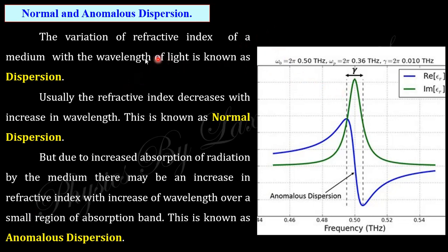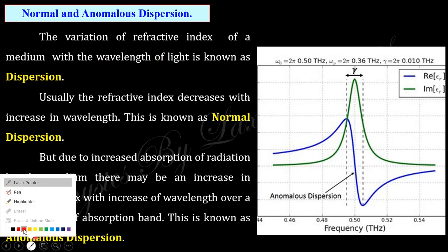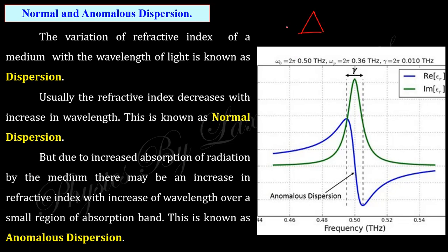What do we mean by dispersion? Dispersion is the variation of the refractive index of a medium with wavelength. You know the prism experiment — when white light, a combination of seven colors, is incident on a prism, it disperses into different colors because the refractive index differs with wavelength, giving different angles of refraction. This is dispersion: the variation of refractive index with wavelength.